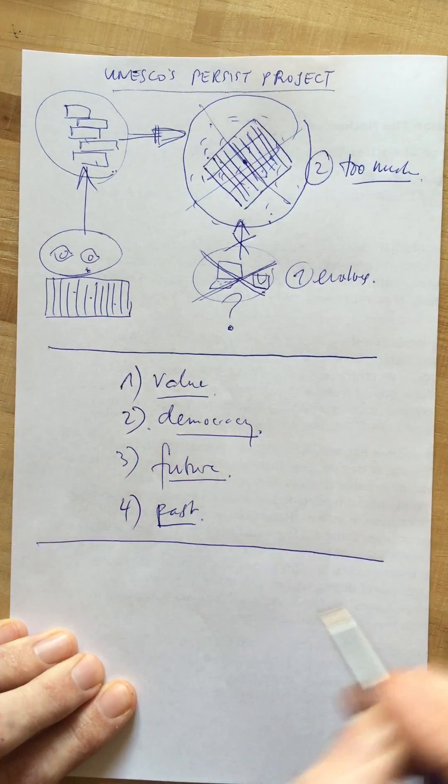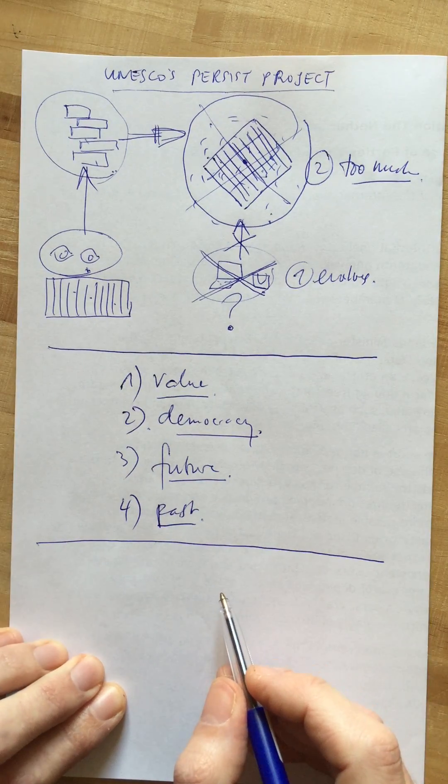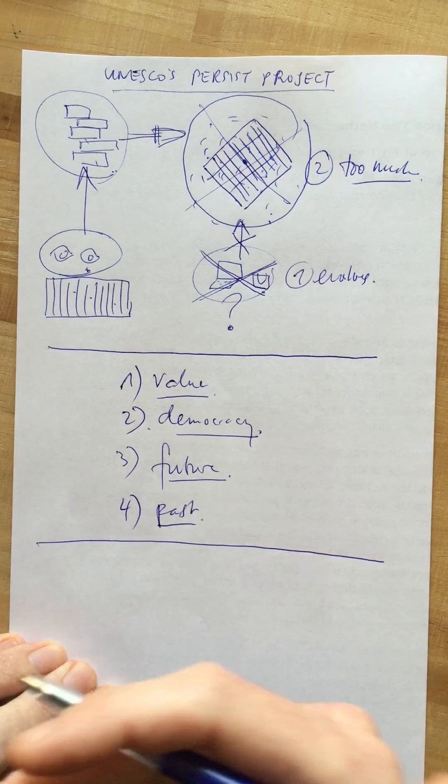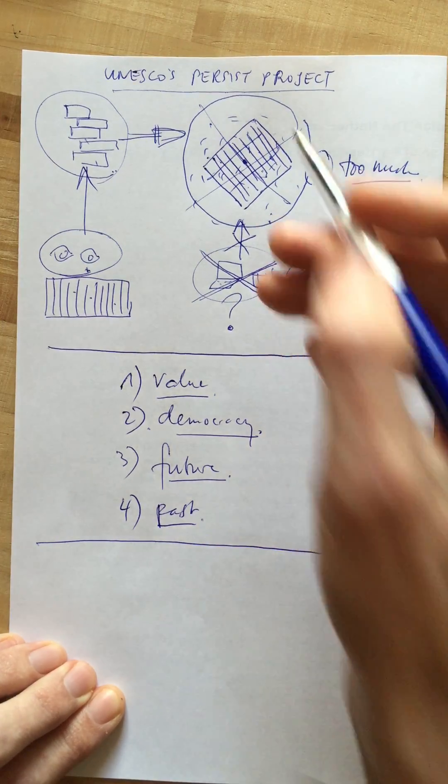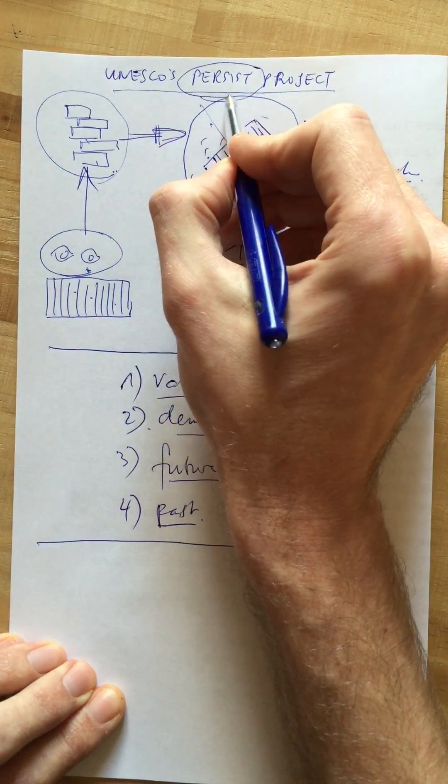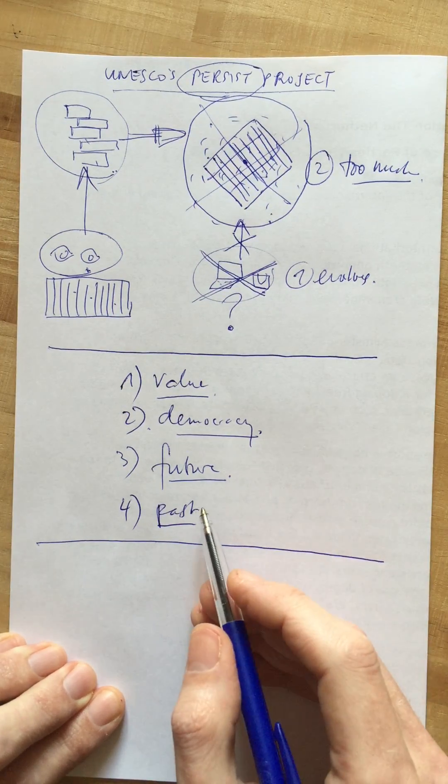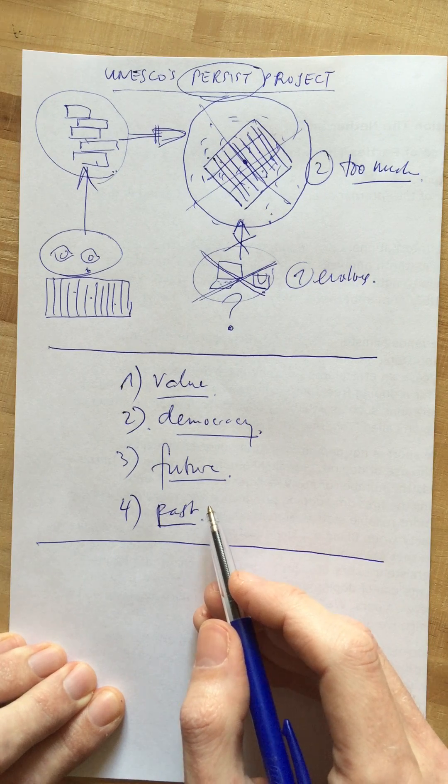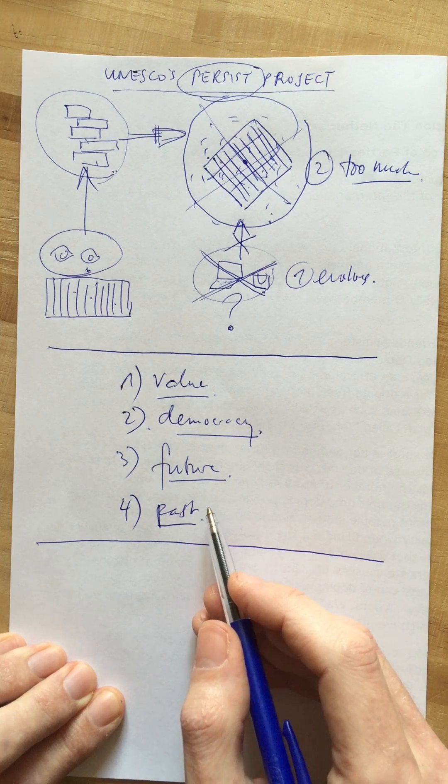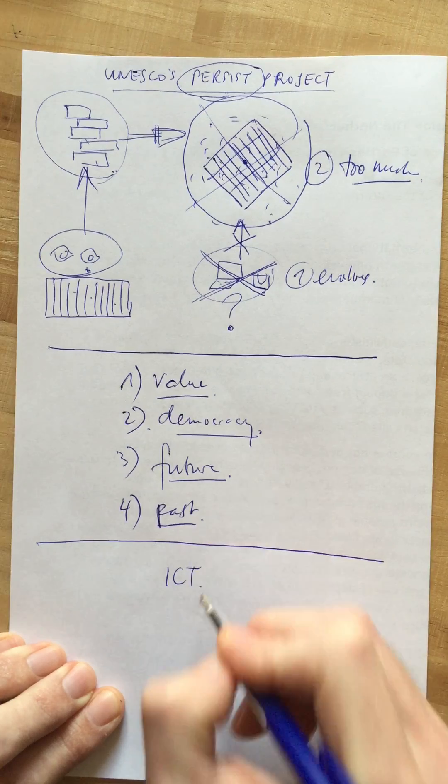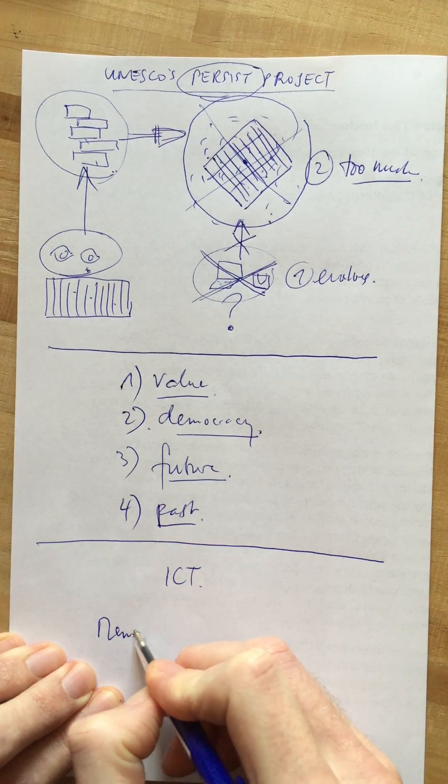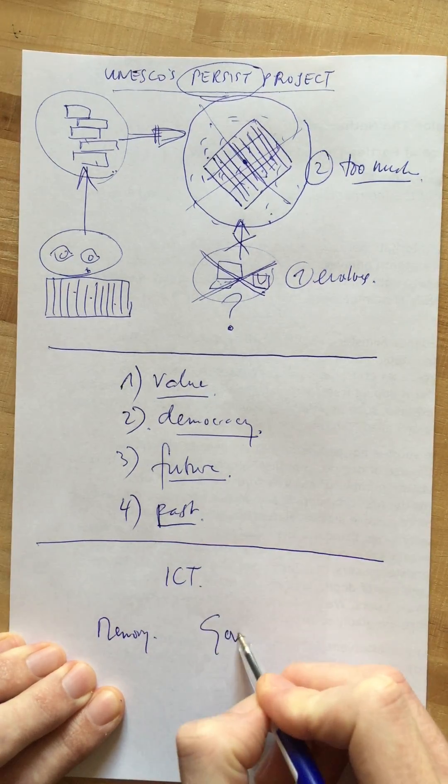Now what is the solution for digital amnesia? How can we keep access to our digital information? That solution is called Persist. Persist brings the partners together in one room who deal with our digital information.